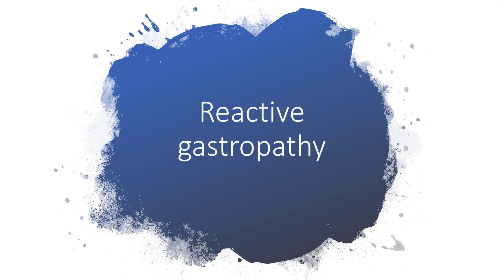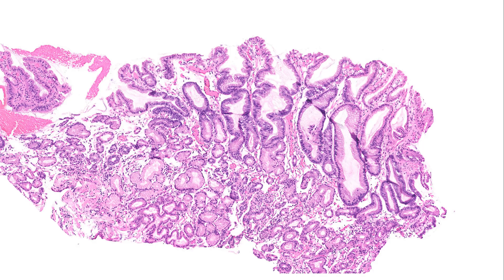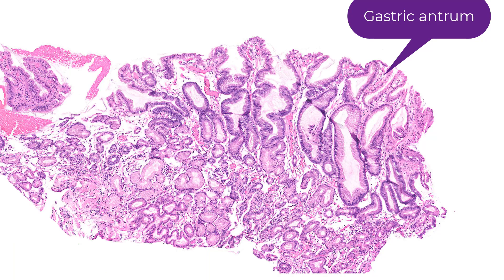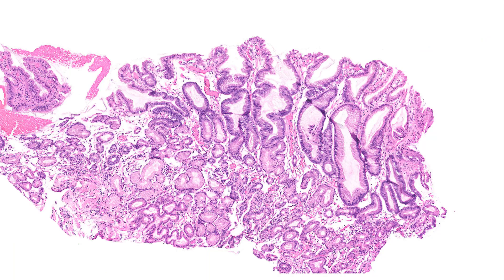Let's talk about reactive gastropathy. This is a perfect example of it. As you can see, this is the antrum. Reactive gastropathy is best seen in its majestic form in the antrum. In the body and fundic mucosa, the changes are muted and tend to be very subtle.